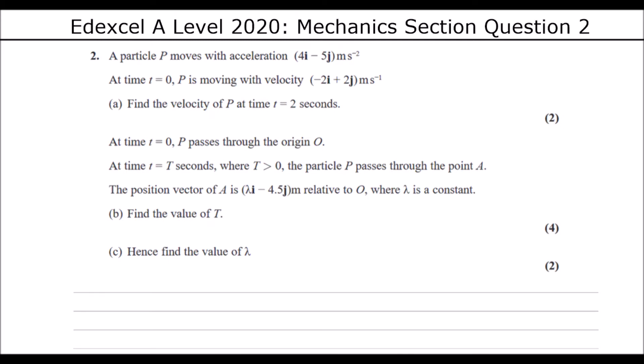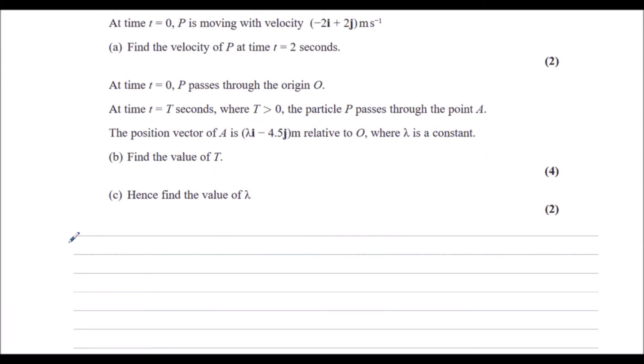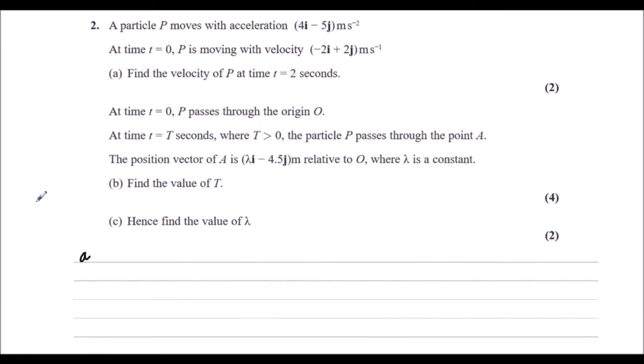This can be a SUVAT question. We know the acceleration is 4i minus 5j. We know at t equals 0, the initial velocity is minus 2i plus 2j. And time is 2 seconds. We want the velocity when t is 2.